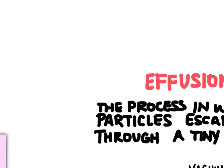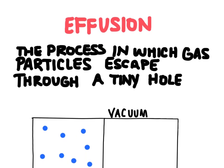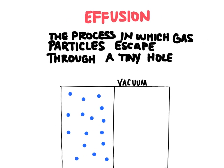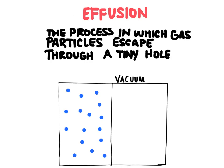Effusion, on the other hand, is the process in which gas particles escape through a tiny hole. It's a bit easier to measure effusion than diffusion. We can measure the rate at which those particles exit one container. All those blue things are gas particles, and we can measure how quickly they escape through a tiny pinprick into the other chamber. And since effusion is easier to measure, it's effusion that Graham's Law is based on.